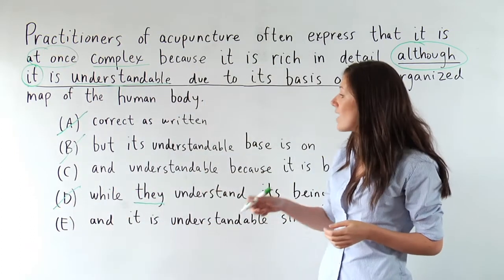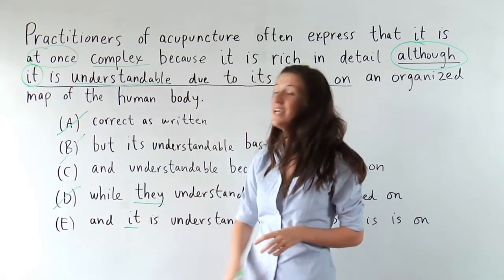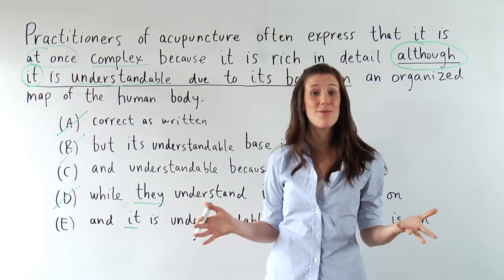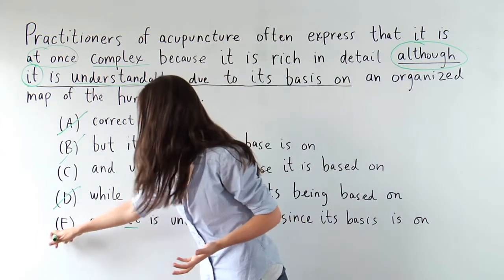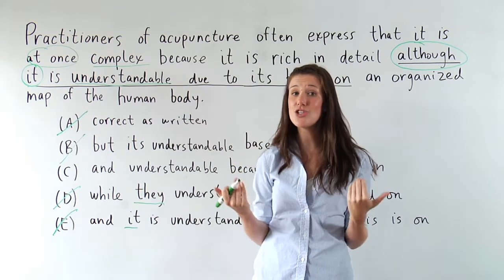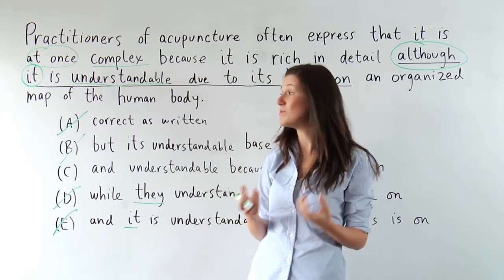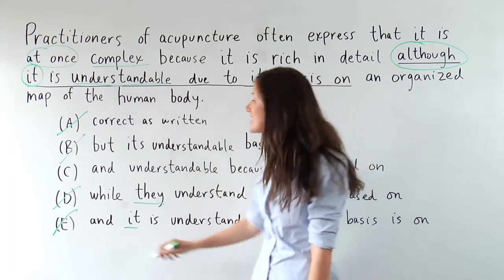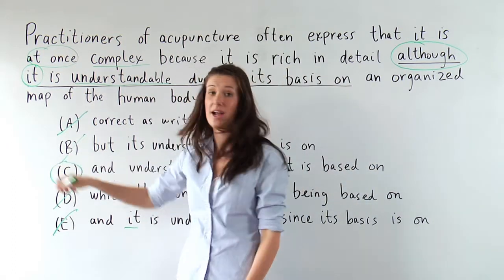How about E, at once, complex, and it is understandable. That's a pronoun, not an adjective. E is out of there. So just based on the fact that I know my connector buddies have to connect the same parts of speech, I've gotten rid of four answer choices, and I'm left with C as the correct one.